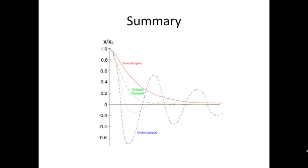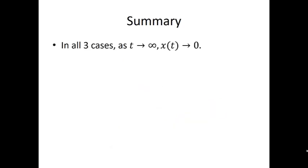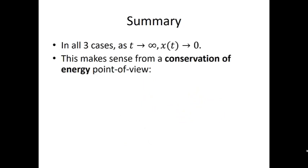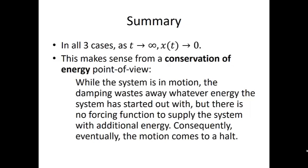Here's the summary of the three different cases: the over damped where we have two distinct real roots, the critically damped that you see in green where we had one real root of multiplicity 2, and then the blue graph is the under damped case when we had complex conjugate roots. Notice that in all three cases as T approaches infinity the position function approaches zero. This makes sense from a conservation of energy point of view. While the system is in motion, the damping wastes away whatever energy the system has started out with. There's no forcing function to supply the system with additional energy, so consequently eventually the motion comes to a halt.